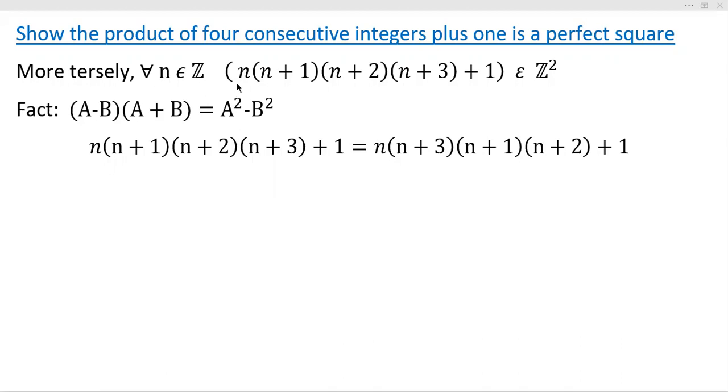Now, so what we're trying to establish is that the product of four consecutive, which is what this says right here: n(n+1)(n+2)(n+3)+1. It's a product of four consecutive. Now, this member, I like this notation that that result is guaranteed to be a member of Z squared. It means it's going to be an integer squared. So that's kind of terse, but I think it gets the point across. Now, it turns out a very common result that you learn in middle school math gets used: the difference of two squares formula right here. (A-B)(A+B) = A²-B². That comes in very handy for this particular problem.